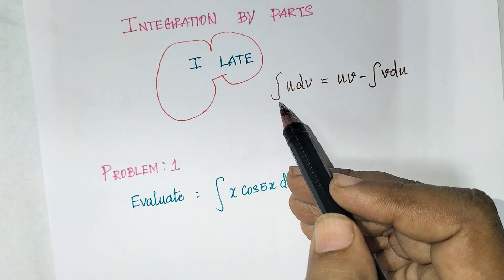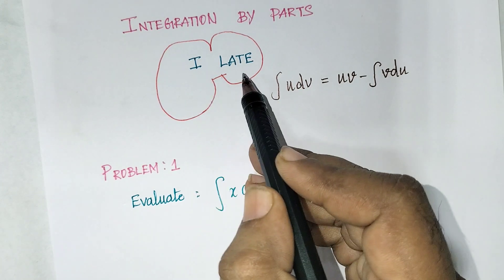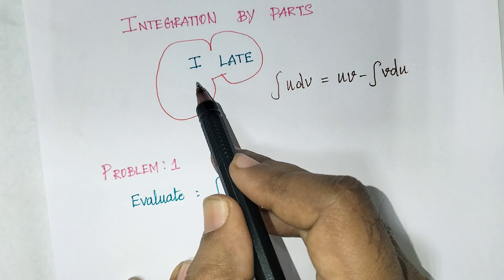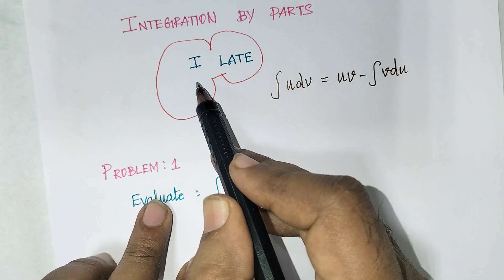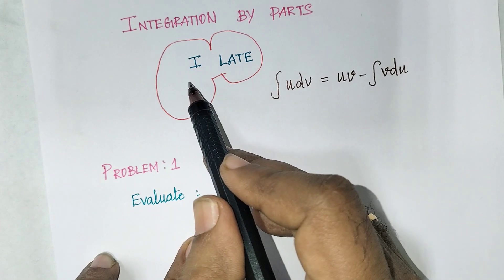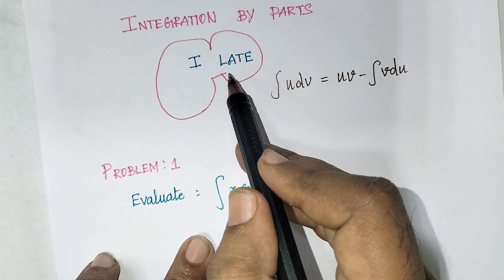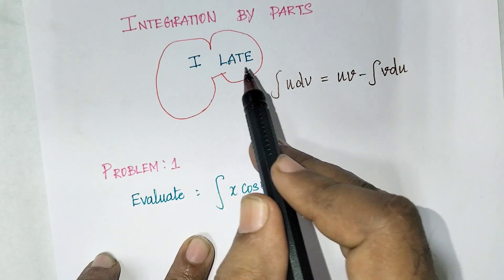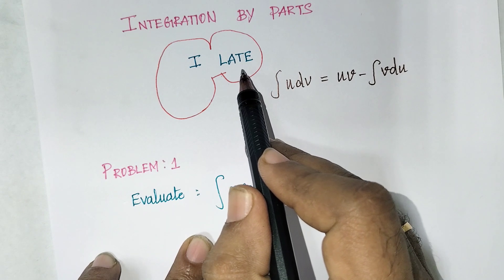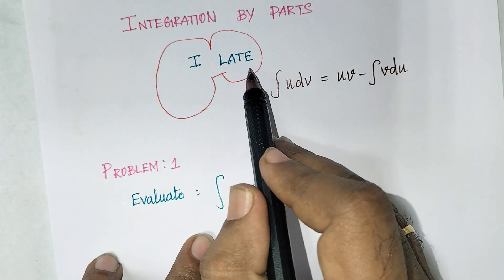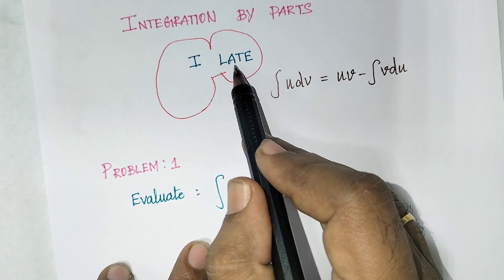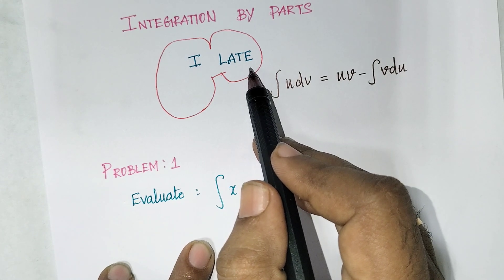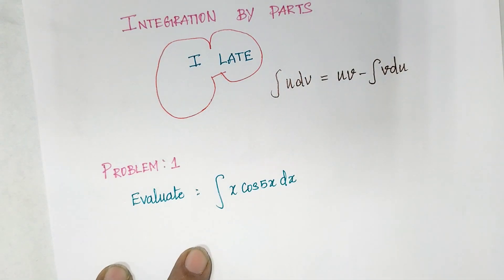How do we give preference for identifying u? The concept is ILATE. I means inverse — if your problem has an inverse term, give it first preference. Then L for logarithmic, A for algebra, T for trigonometric, and E for exponential. This is the rule we follow while identifying u.